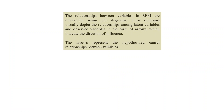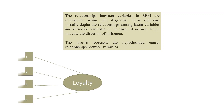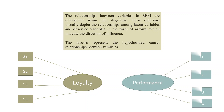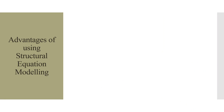The relationships between variables in SEM are represented using path diagrams. For example, loyalty is captured with four statements, and the performance of an employee is captured with four statements. We want to study the effect of loyalty on performance — this is shown in the path diagram. These diagrams depict the relationships among latent and observed variables in the form of arrows indicating the direction of influence — the cause and effect sequence. The arrows represent the hypothesized causal relationships between the variables.